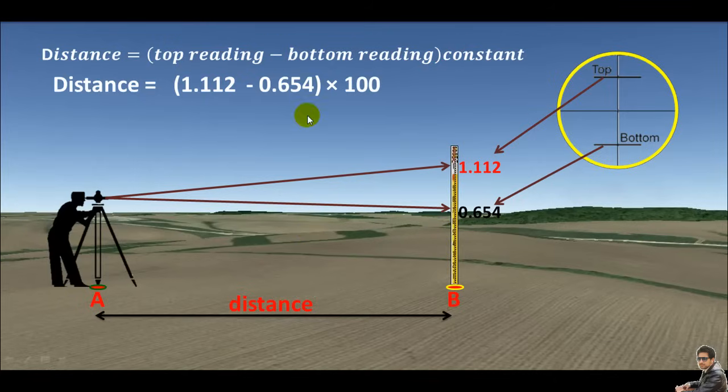But how can we get this constant or where does this constant come from? Remember, when you buy a new thing, there is always a manual with it. Similarly, when you buy a new leveling machine, there is always a manual. So the constant can be found in that manual.